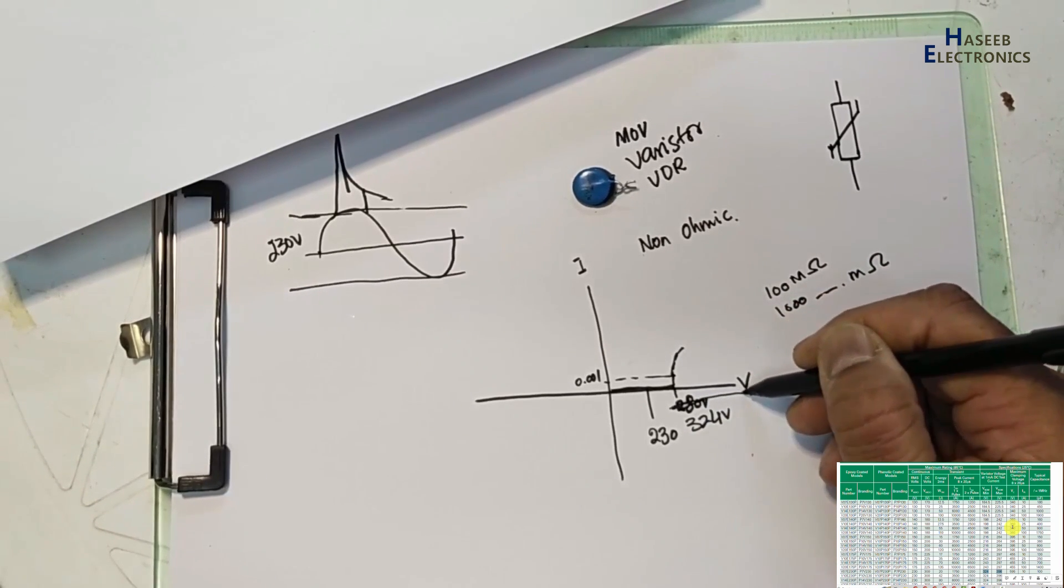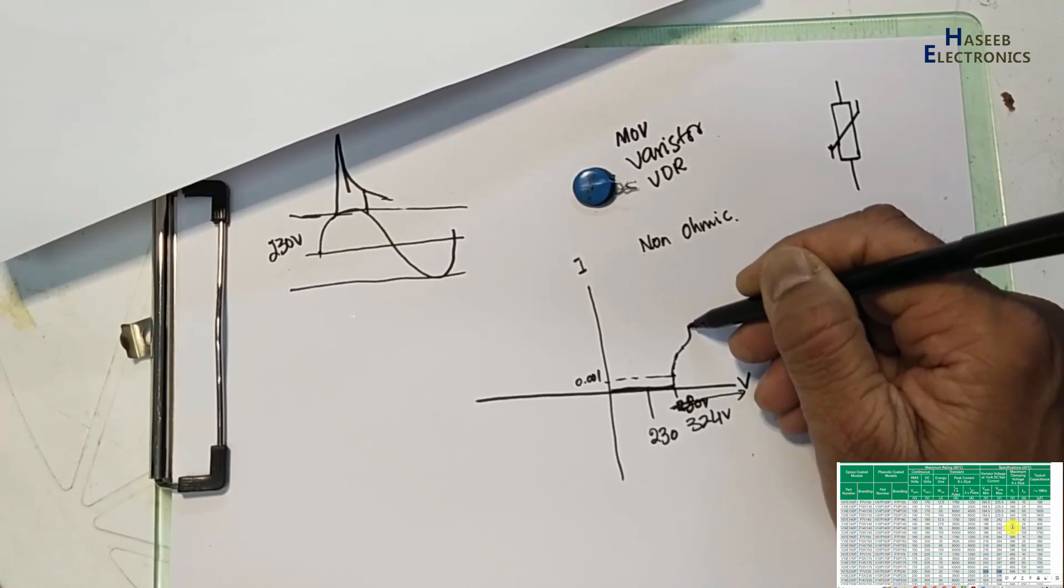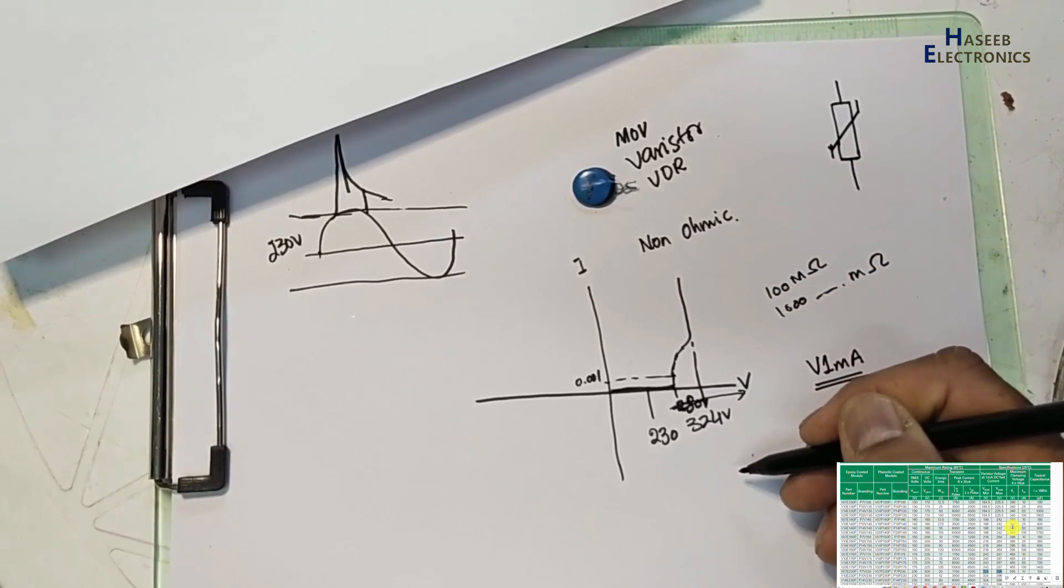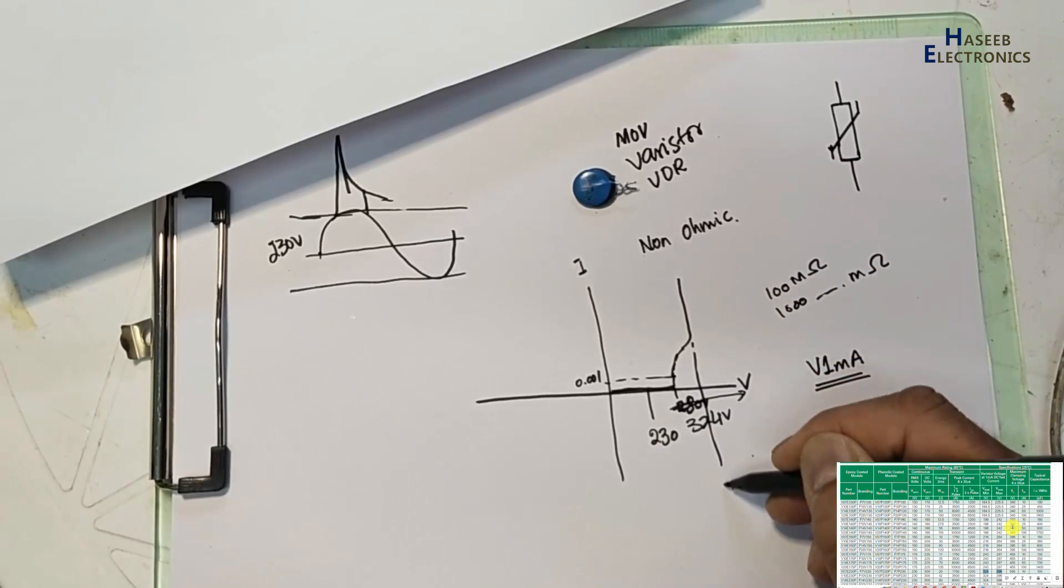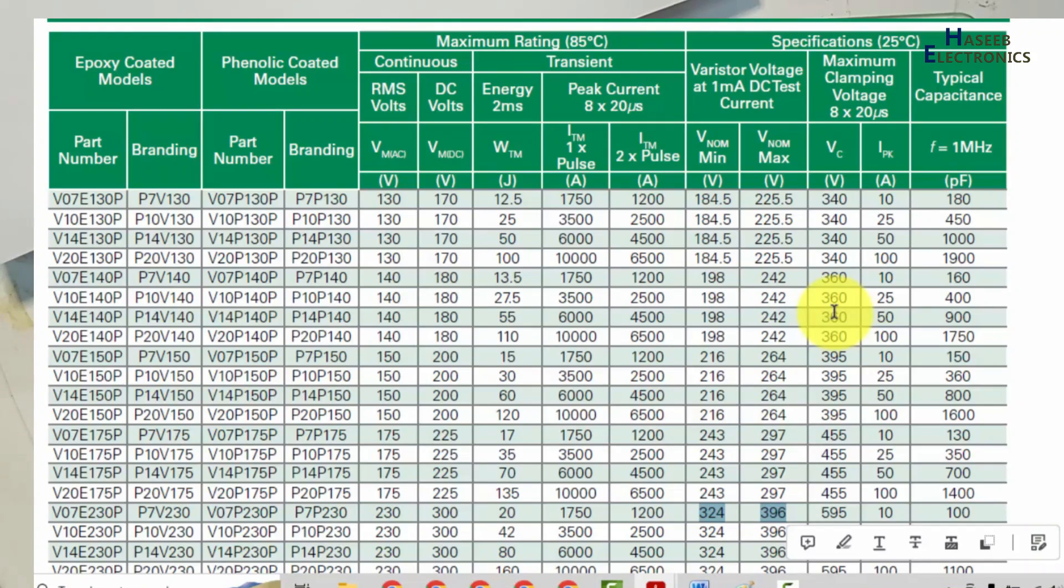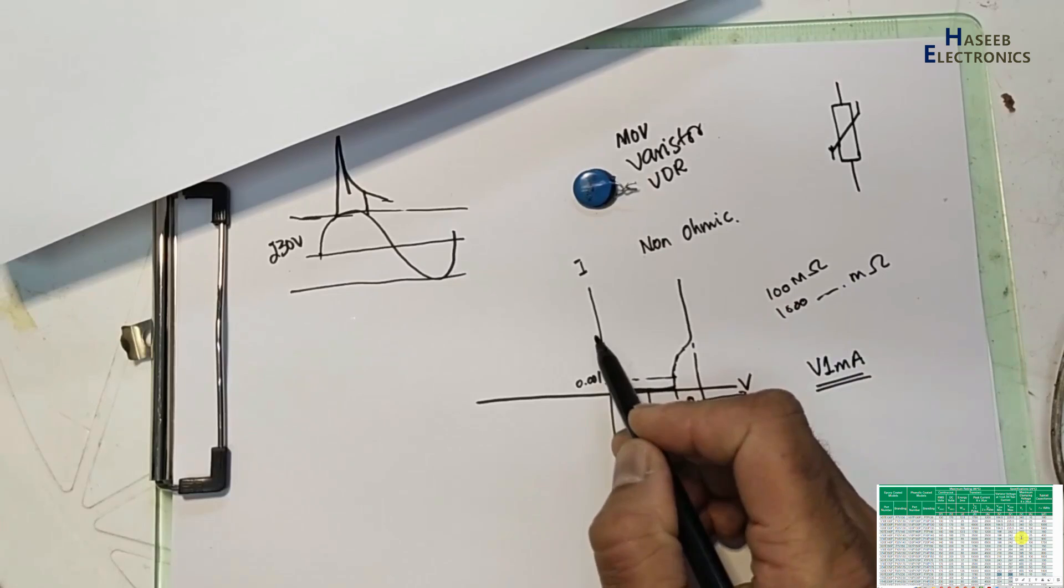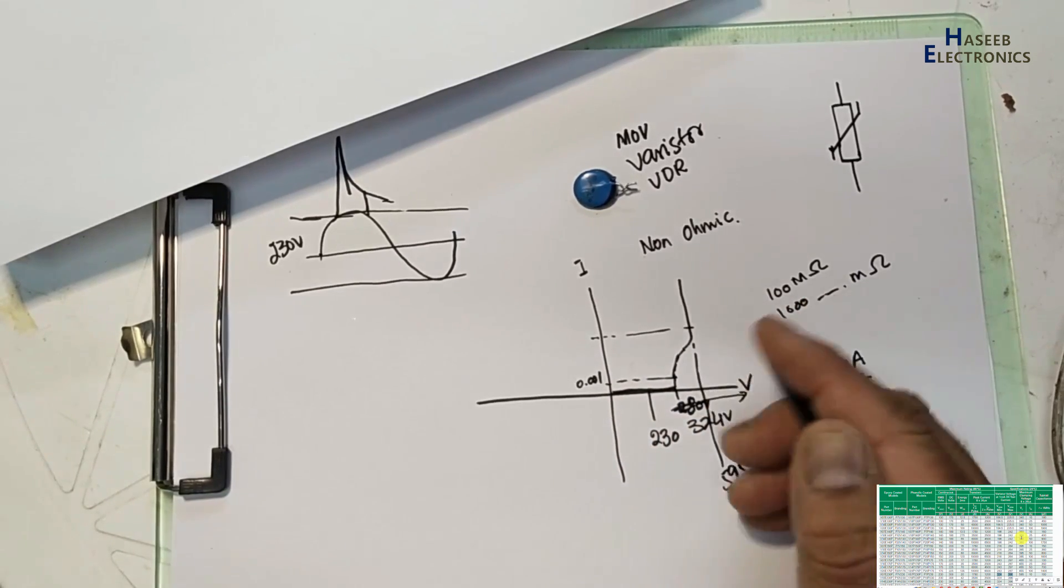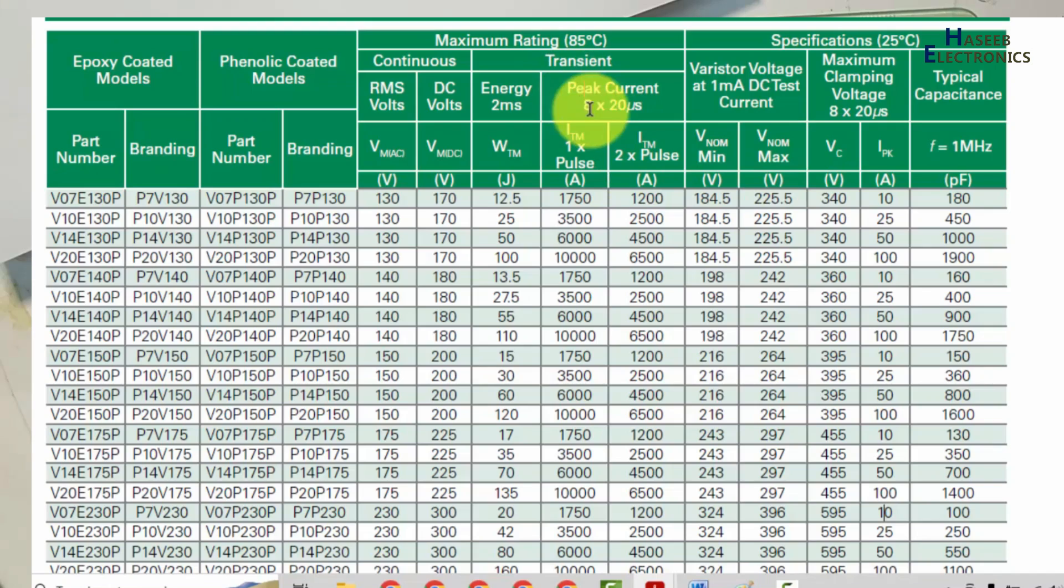Now voltages are increasing, but it will clamp the voltage at this level - that is 595 volts. And this time, peak current will be 10 ampere.